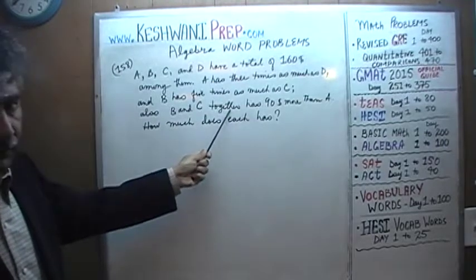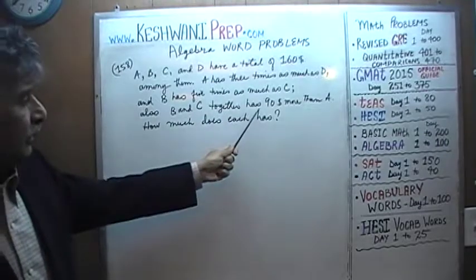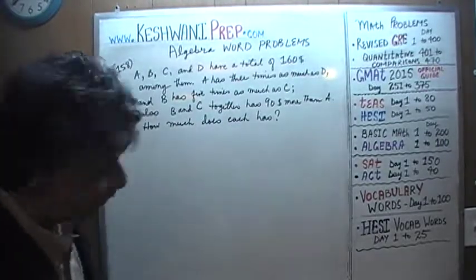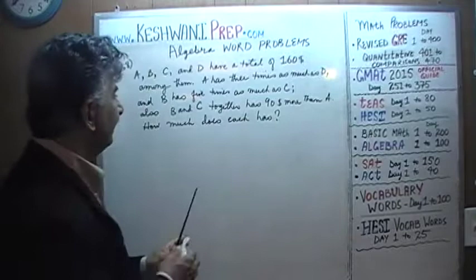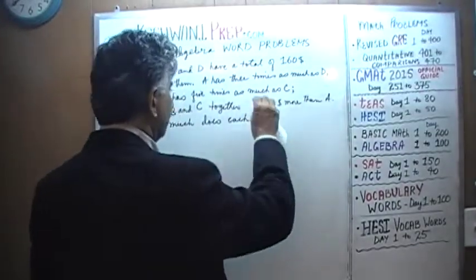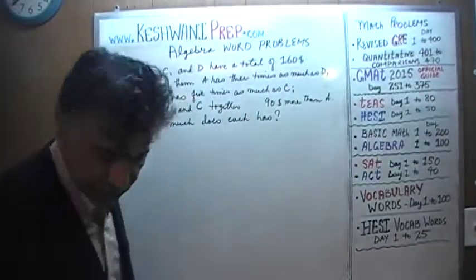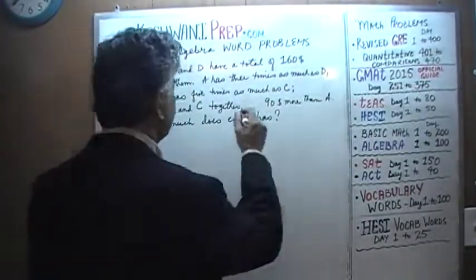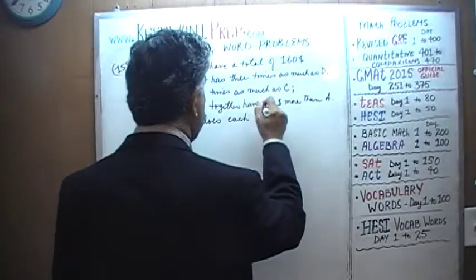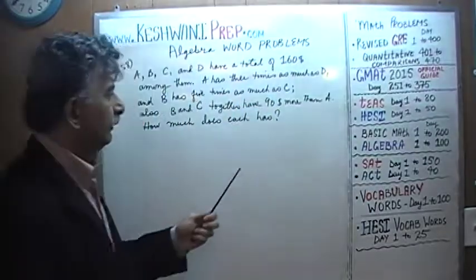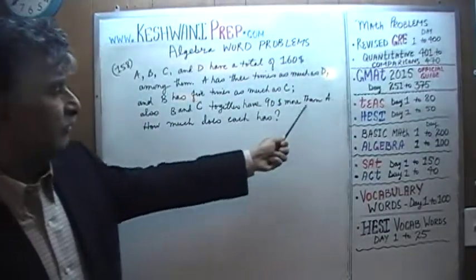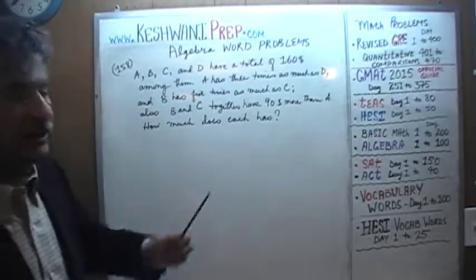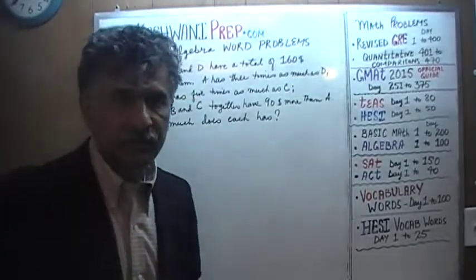Furthermore, we are told that B and C together — it should say 'have,' not 'has' — B and C together have 90 dollars more than A. How much does each person have?